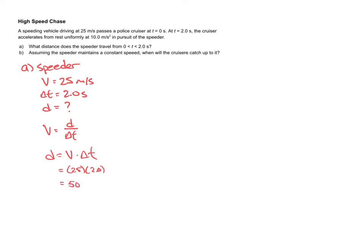The units would be meters because speed's in meters per second, time is in seconds. That's going to result in the distance being in meters. Sig figs should be two sig figs. All right, so essentially this is like the head start that the speeder has on the cop, because it takes two seconds before the cop gets their car going. So within that two second time, the speeder has been able to go 50 meters.